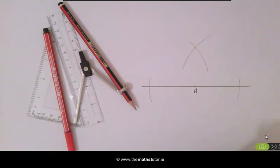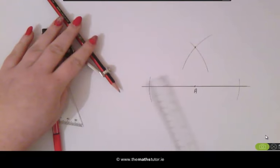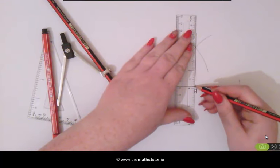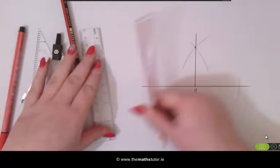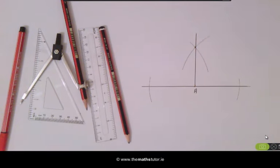We are going to mark this point of intersection and using a straight edge we are going to join this to our point A. And here we can see we have our perpendicular line passing through A.